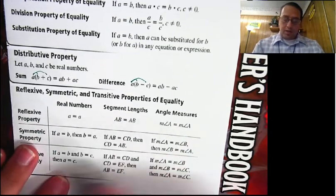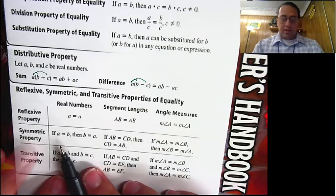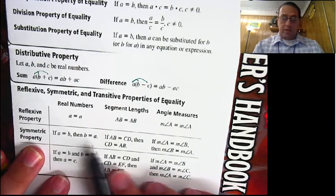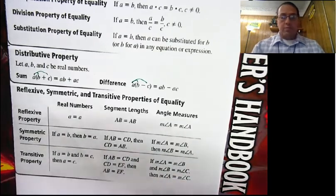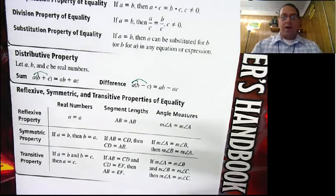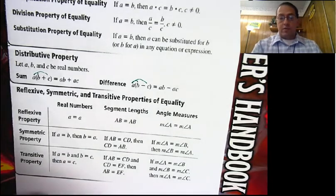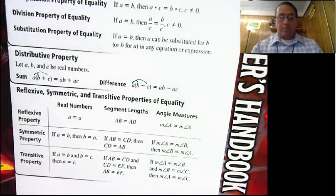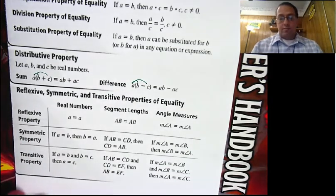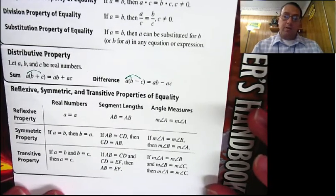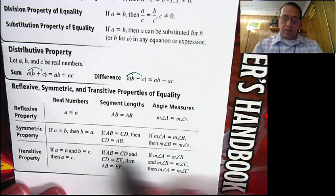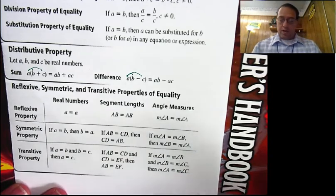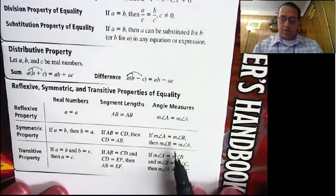Symmetric property: if a equals b, then b equals a. All that happens is we change the order around. We actually do this a lot — when working out problems you end up with something like 5 equals x, but you want x to go first, so you rewrite it as x equals 5. This is just the symmetric property that says you're allowed to do that. It works with segment lengths and angle measures, because those are just numbers.